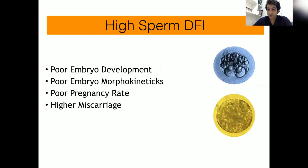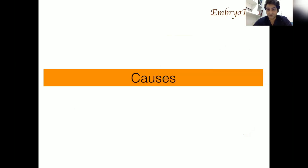Both apoptotic and non-apoptotic sperm look the same and can fertilize the oocyte, but the apoptotic one has high DNA fragmentation which can lead to poor embryo development, poor embryo morphokinetics, poor pregnancy rate, and higher miscarriage.